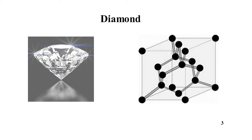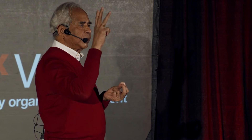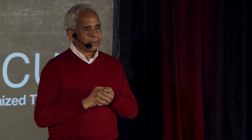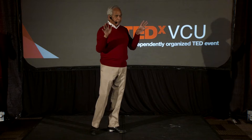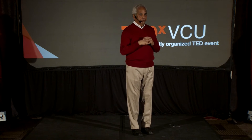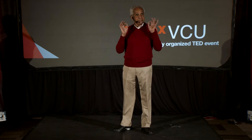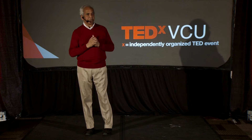In diamond, which also nature gives us, it is also made of carbon atoms, but the atoms are arranged differently. Here, the atoms are arranged in such a way that each carbon atom has four carbon atoms nearby. Graphite has only three carbon atoms in its vicinity. So the only difference between graphite and diamond is how they are arranged, and because of this arrangement, the properties are very different.